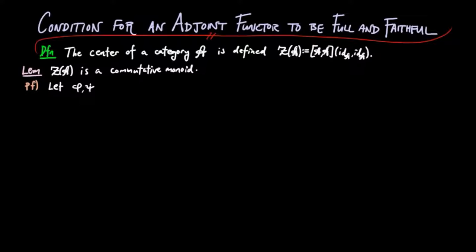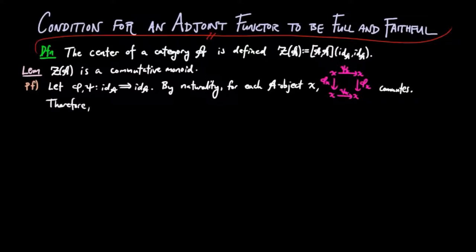Indeed, let phi and psi be in the center of A. By naturality, for each A object x, the following commutes. Hence, phi psi is equal to psi phi on each component x. Therefore, the center is a commutative monoid.